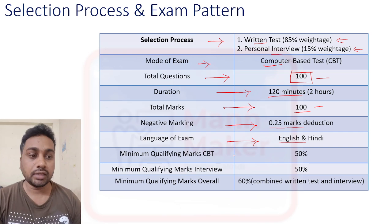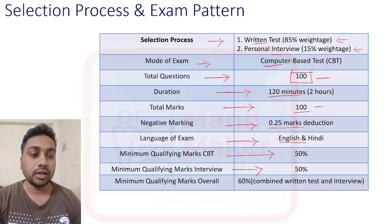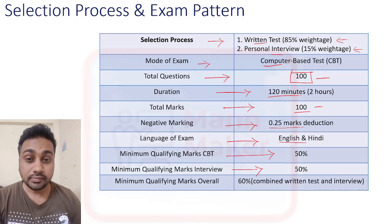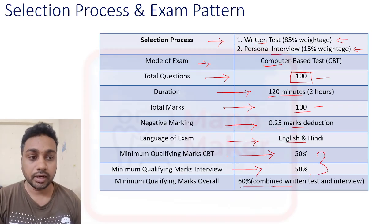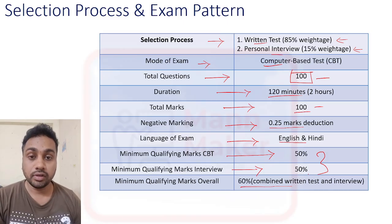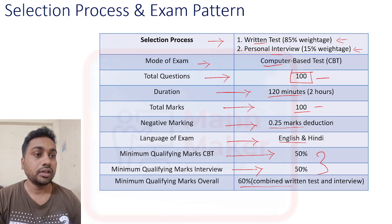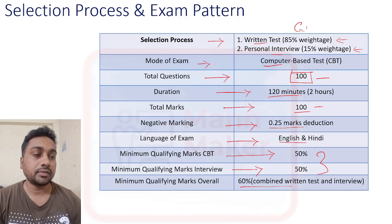To qualify the CBT exam, you need to get at least 50 marks. For the interview also, you need to get at least 50. For final selection, overall you need to get 60% — that is, combined written exam and interview marks should meet the 60% minimum qualification threshold, and then you will be selected for this job.